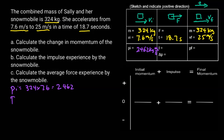Then I'm going to calculate the final momentum. By filling out this chart, I'll get all the information I need to answer this question. The final momentum is mass times velocity: 324 times 25, and we get 8,100.